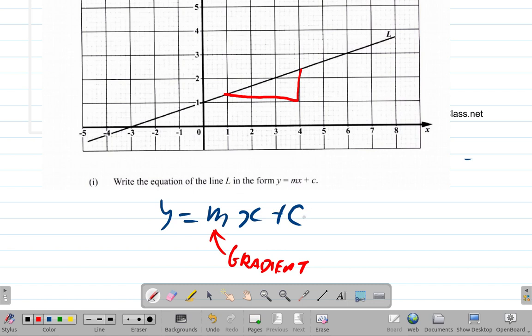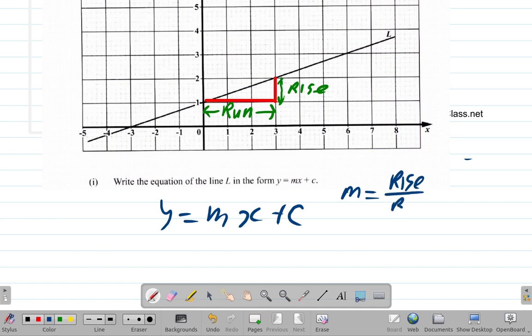Y equals mx plus c. Remember that m is the gradient, the rise over run, and c is the point where the line cuts the y-axis. We want the gradient first. To get the gradient, we look at forming a right angle triangle between two points.